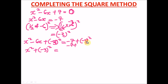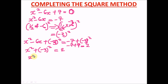On the right-hand side: minus 3 times minus 3 gives us positive 9, so we have minus 7 plus 9, which equals 2. On the left-hand side, this simplifies because the negative inside the bracket cancels with the positive, giving us: (x minus 3)² equals 2.